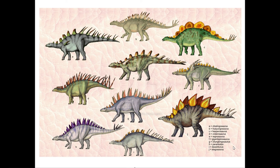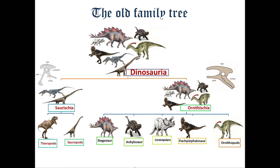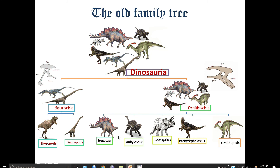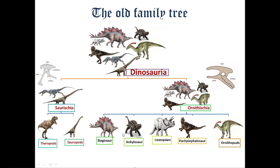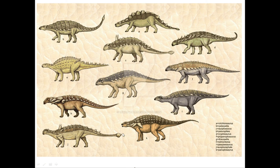Stegosauria is the clade which includes quadruped herbivore dinosaurs having plates on their back and spines at the end of their tail. They include the very famous dinosaur Stegosaurus. Ankylosauria is a sister clade to Stegosauria, but instead of having plates they had spines and heavy armor on their back. They were also herbivores.